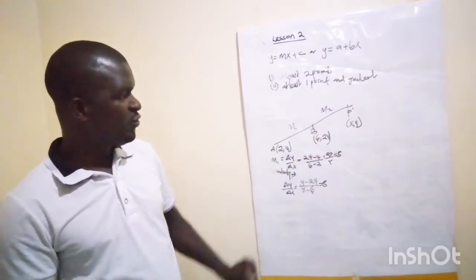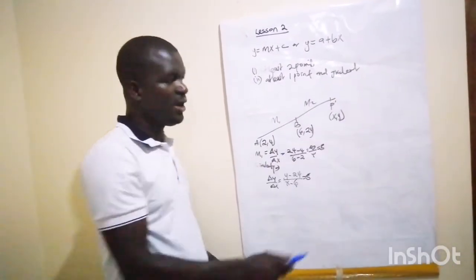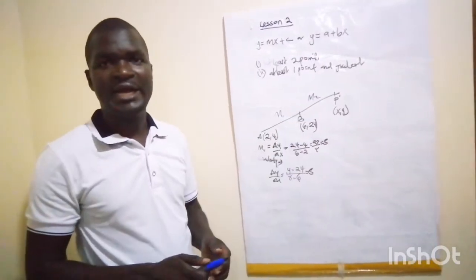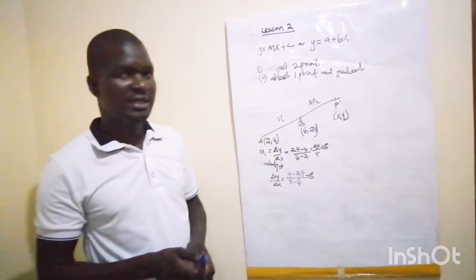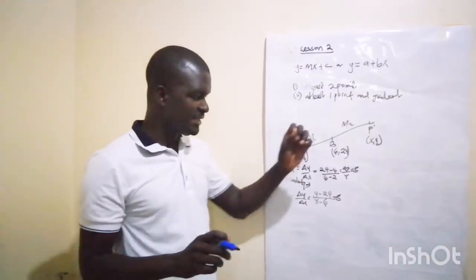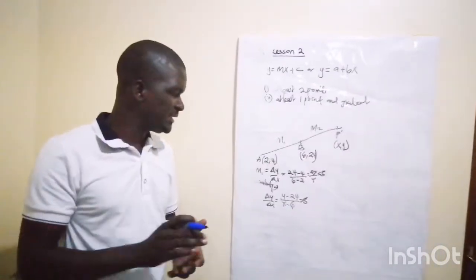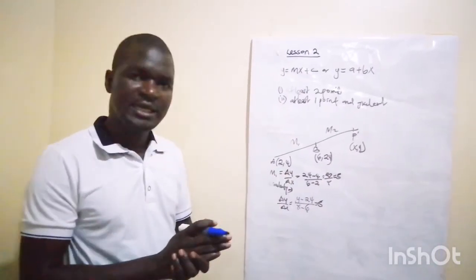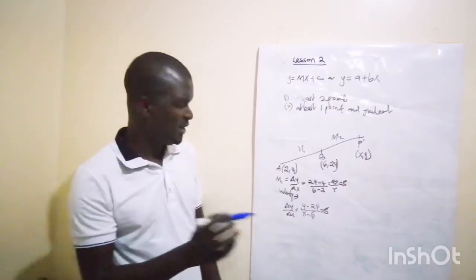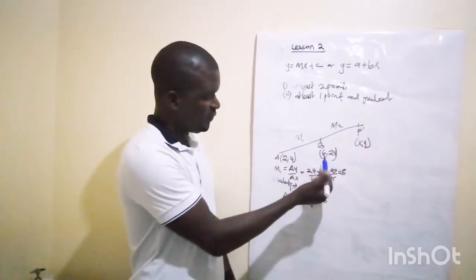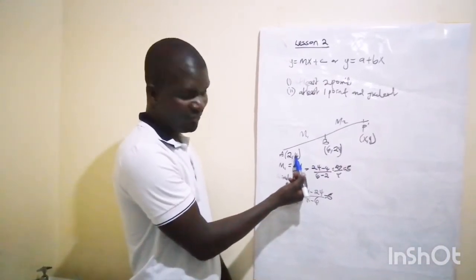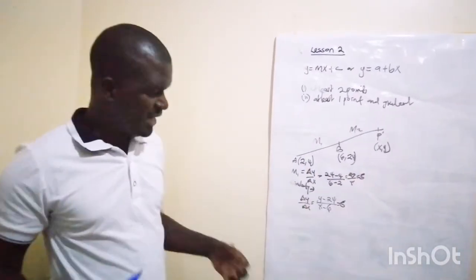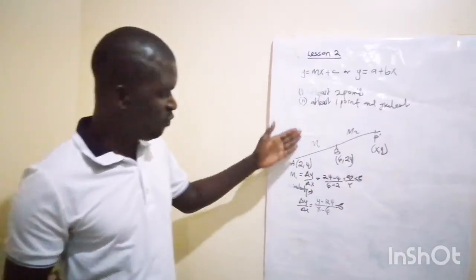Let's say there's another point (x, y) on the line. With a straight line, the gradient m will always be the same at any given point. Gradient is the change in y over the change in x. So here we have (24 - 4) over (6 - 2), which gives a gradient of 5.